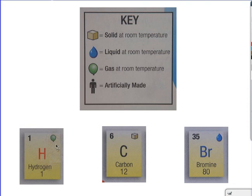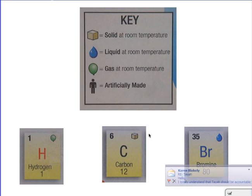So as we see down here, hydrogen has the symbol for a gas because at room temperature, hydrogen is a gas. Carbon has the symbol for solid because at room temperature, carbon is a solid. And bromine has the chemical symbol for liquid because at room temperature, it is a liquid.